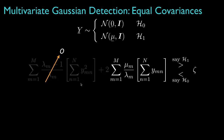This means that the first term in the decision statistic — the one that has the quadratic, or the squared values for the data — will be equal to zero. And the second term will only depend on the data and the values for the pre-processed mean.